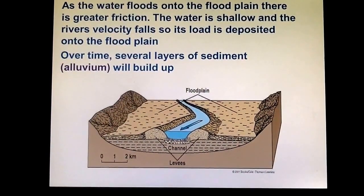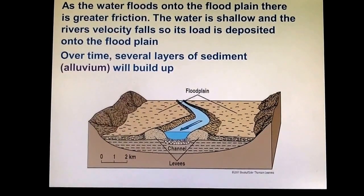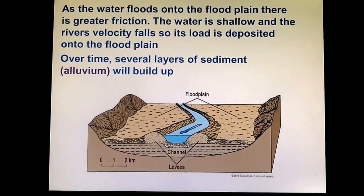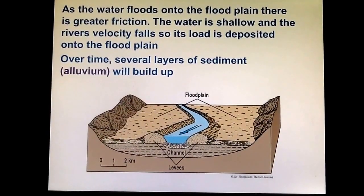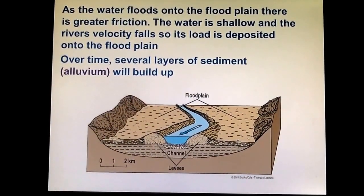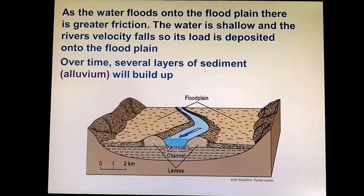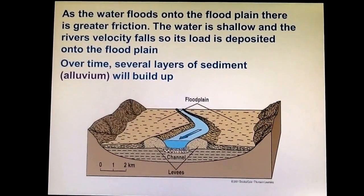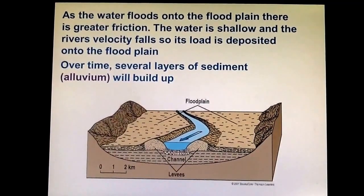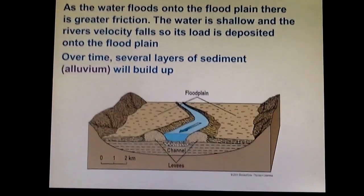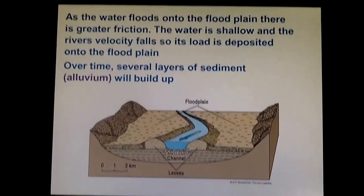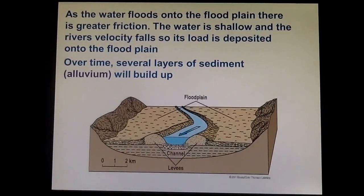You get a lot of deposition onto the floodplain — lots and lots of sediment deposited next to the river. If a river floods over and over again, this creates a build-up of several layers of sediment. We sometimes call it alluvium, and you can get layers and layers of this next to the river.